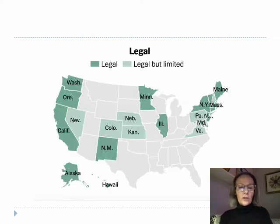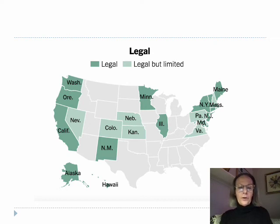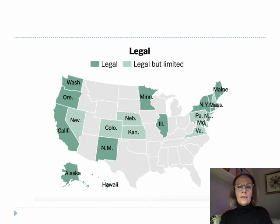Some states have abortion bans on the books that are currently blocked, with the question working through state courts. Just as 13 states have full bans on abortion, 13 states have full access to abortion — shown in green. Minnesota and Illinois, the states closest to Wisconsin, have full legal access to abortion.